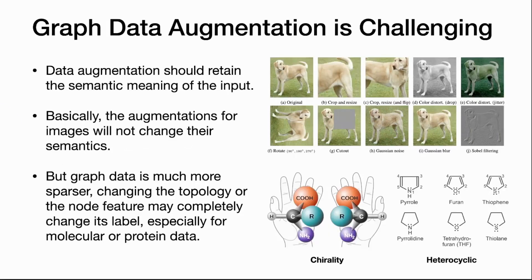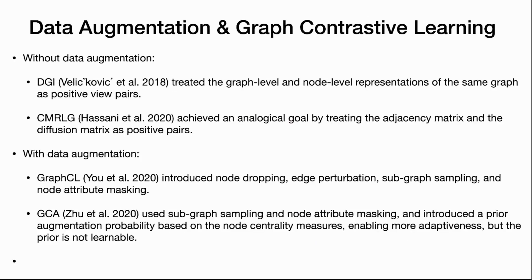Graph data augmentation is very challenging. Unlike augmentation in images, where rotating or cropping basically does not change semantic meaning, graph data is much sparser, so changing the topology or node features may completely change classification labels, especially for molecular or protein data. Some works tried graph contrastive learning without data augmentation — for example, Deep Graph Infomax treated graph-level and node-level representations of the same graph as positive pairs.